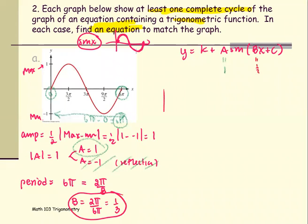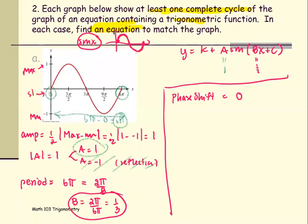Next, we're going to look at the phase shift. The phase shift is the beginning point of the cycle. The phase shift is 0 in this case, because the graph starts at 0. The formula to compute the phase shift is negative c over b. Since the phase shift is 0, therefore, c equals 0.